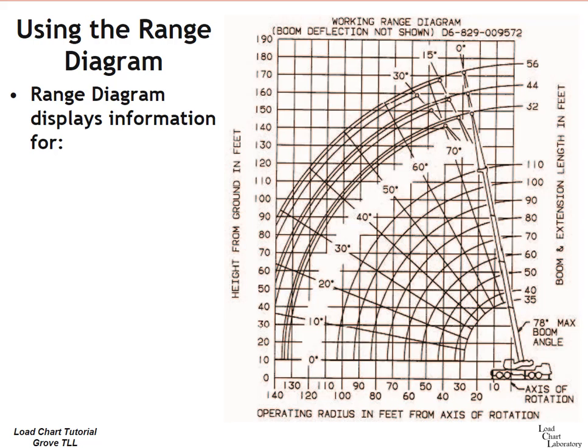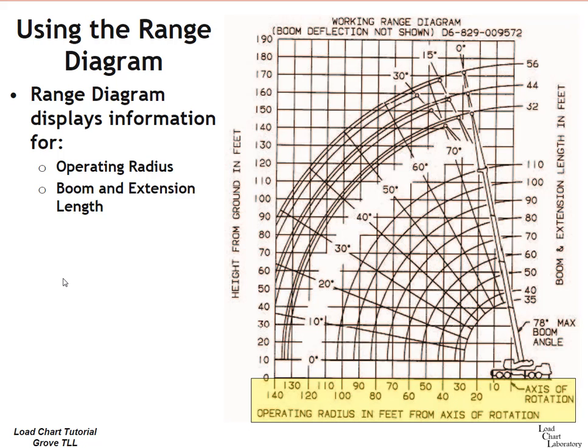The range diagram contains information for the operating radius found at the lower part of the range diagram document or image. Boom and extension lengths from 35 feet of boom up through the 56 foot extension over on the right hand side of the diagram.